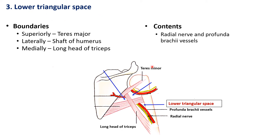The lower triangular space is located inferolaterally. Its superior boundary is formed by teres major, its lateral boundary by the shaft of the humerus, and its medial boundary, same as the quadrangular space, by the long head of triceps. The structures passing through it are the radial nerve and profunda brachii vessels. Compression here, known as triangular space syndrome, can result from fibrous bands or fracture of the shaft of the humerus, potentially injuring the radial nerve and causing wrist drop.